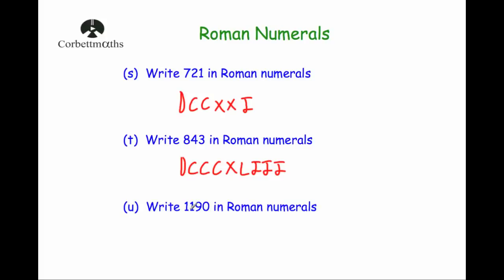Write one thousand one hundred and ninety in Roman numerals. A thousand is M, a hundred is C, and ninety is ten before a hundred, so XC. Put together that gives us MCXC.